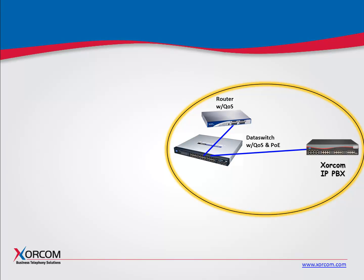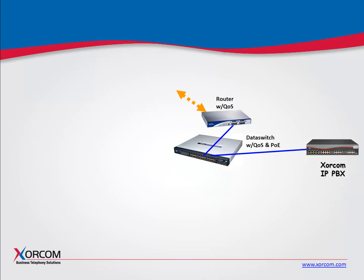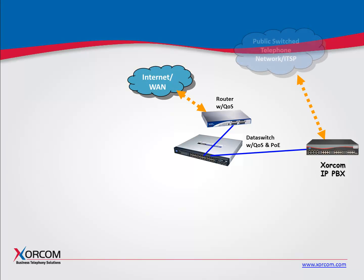The router does its job and connects to the Internet to supply Internet access for your computers connected on the network. The telephone system or the PBX server is connected to your local telephone company for either analog phone lines or digital circuits, such as PRI, T1, or E1, or with R2 signaling, depending on which part of the world you're installed in.